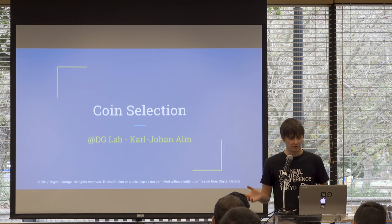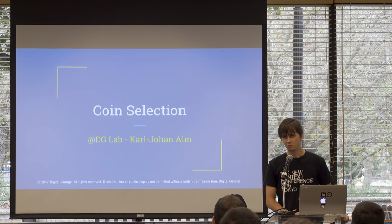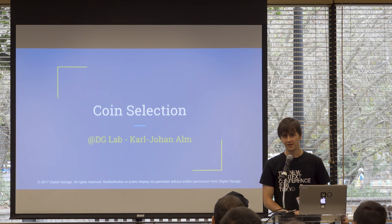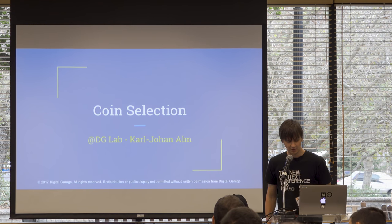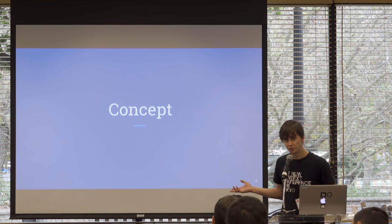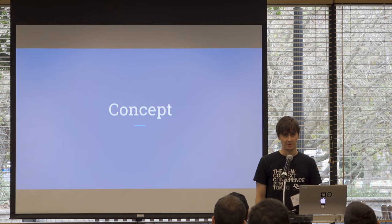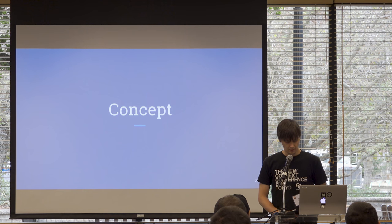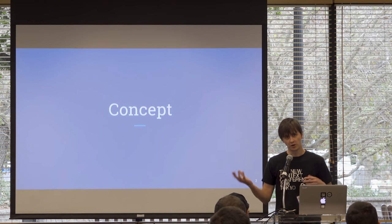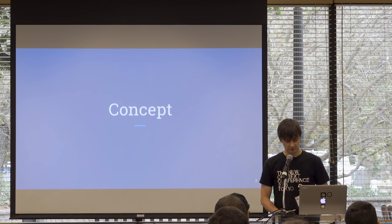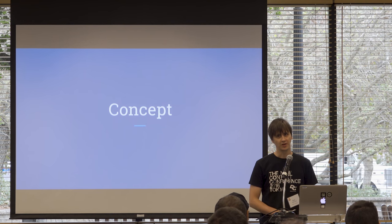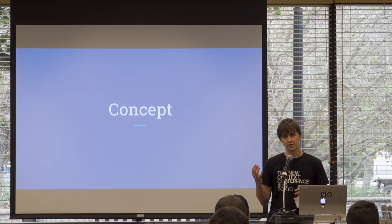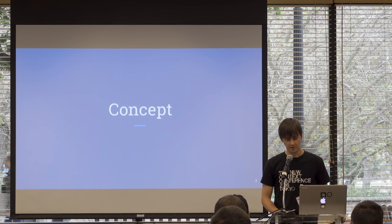Unless you're familiar with how UTXOs and stuff work, this might be a little confusing, but hopefully it'll be clear if you think about it a little. I'll go through the concept — what it is and why it's needed — and then I'll go through how it's done in Bitcoin Core. Different wallets have different implementations of this. There's actually a talk from Scaling last year talking about how coin selection can be made better.